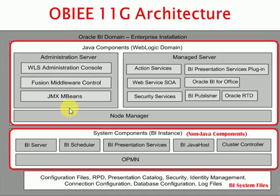When talking about OBIAE, it is a web-based reporting tool. We have to first create an RPD, then deploy the RPD in the BI system. The BI system uses this and displays reports in the browser. You should know about the components and the available types of components in this end-to-end process.